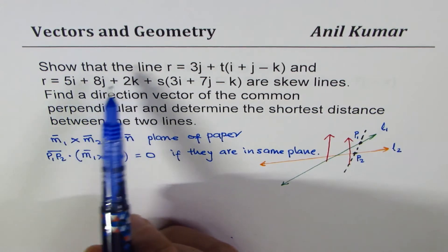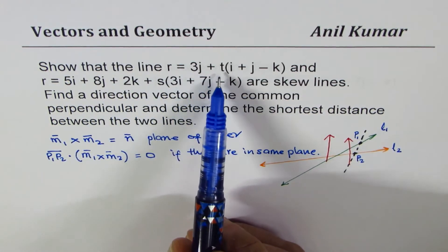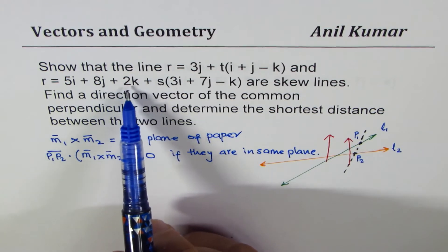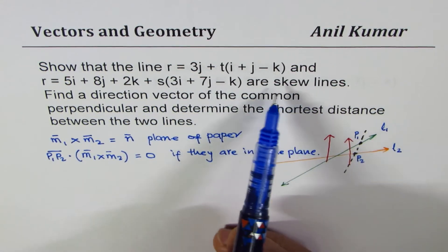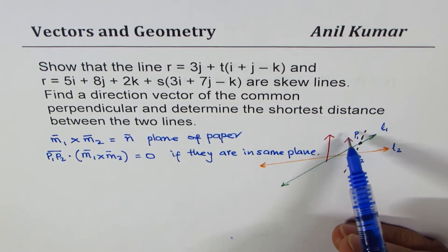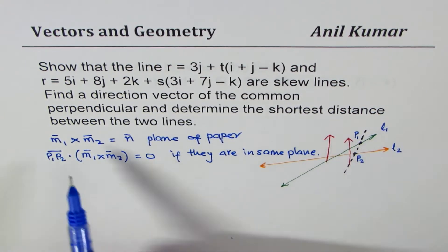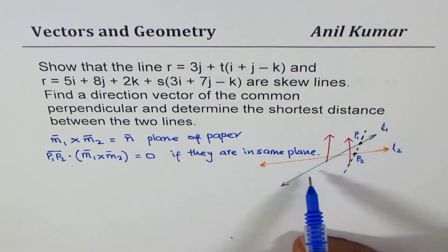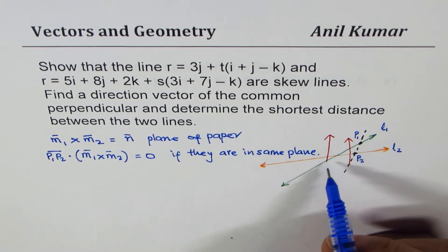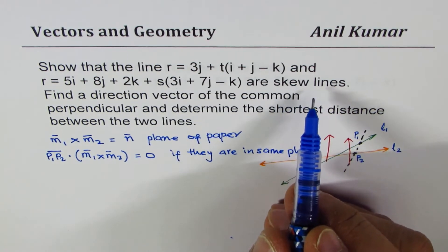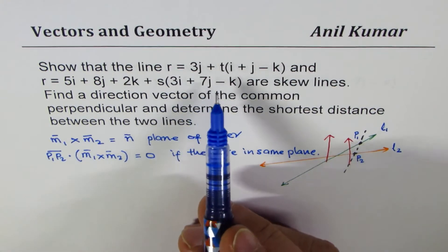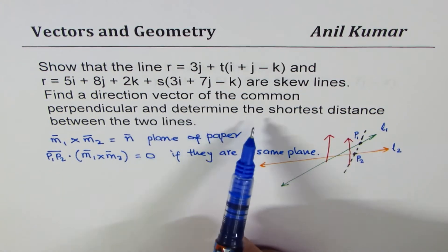So the first part is to show these are skew lines. Skew lines basically means they are not in the same plane — they are in parallel planes and will never intersect. If the dot product is zero, the distance between the two lines is zero, meaning they intersect. We will find the normal between the two lines, which we will also need for the shortest distance.